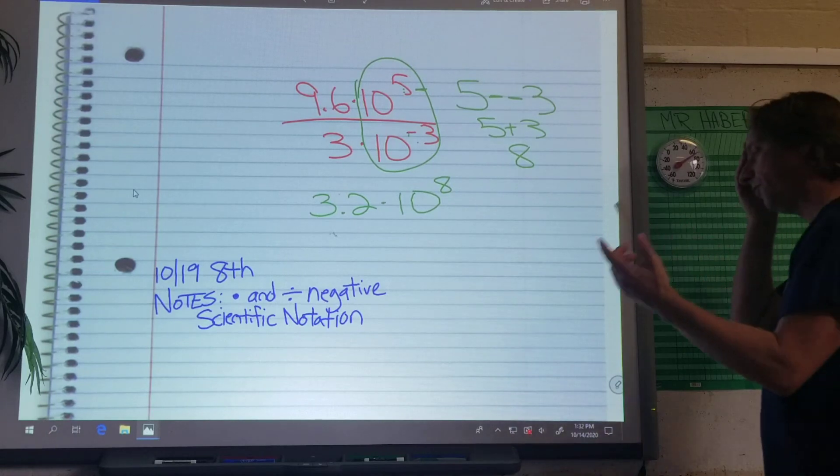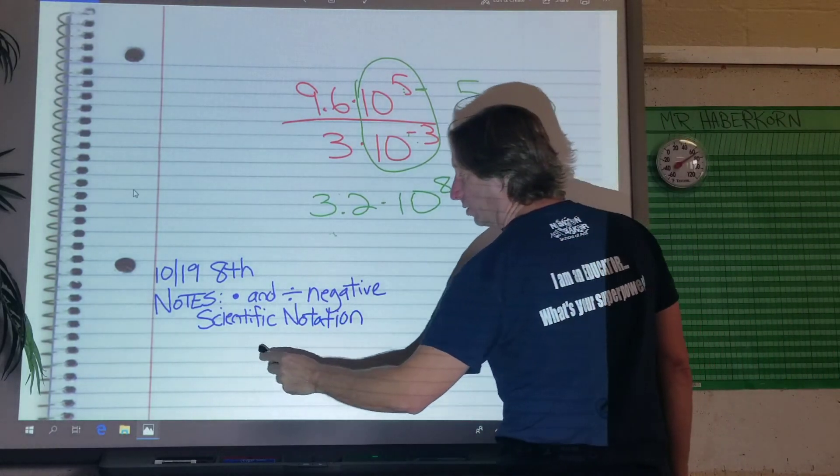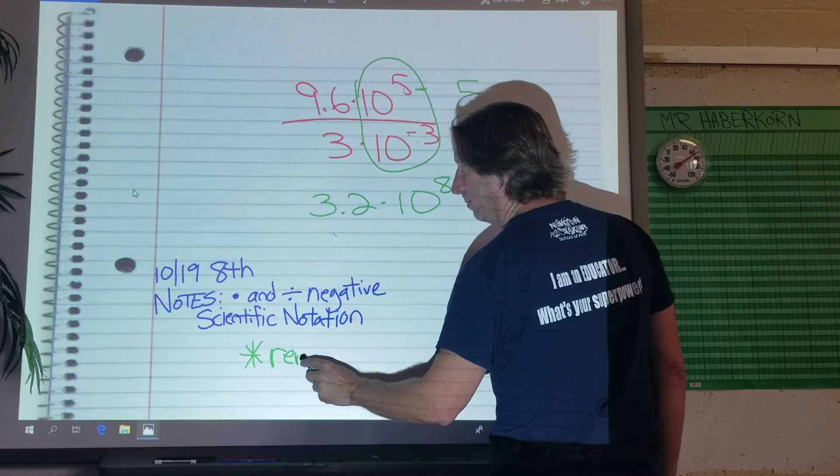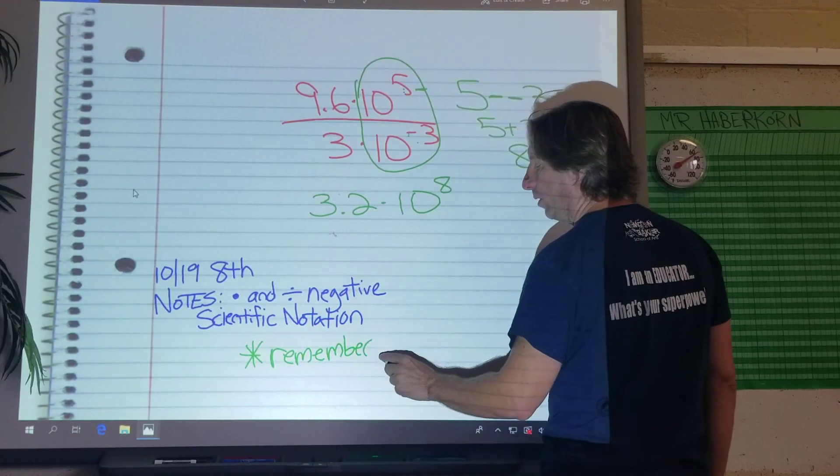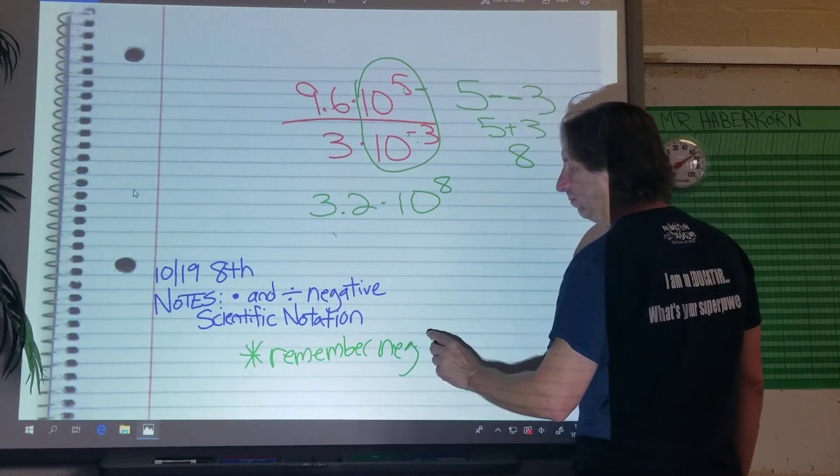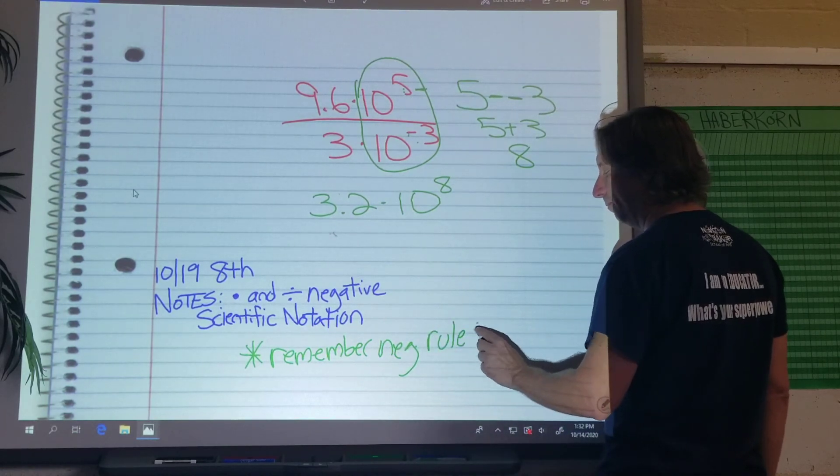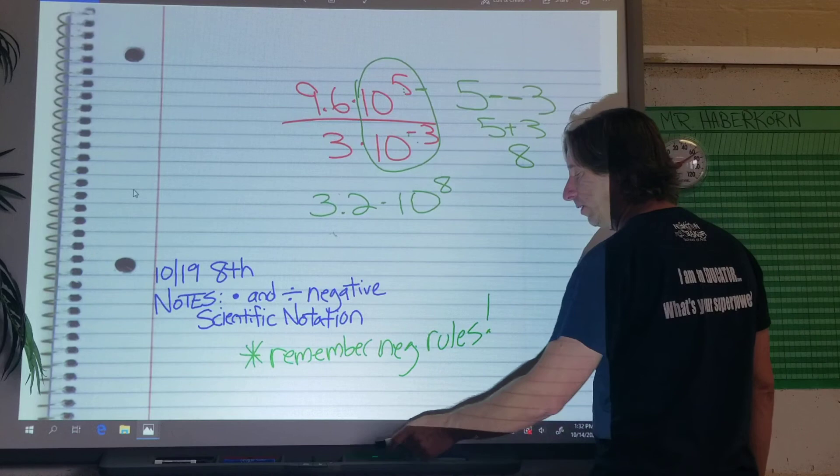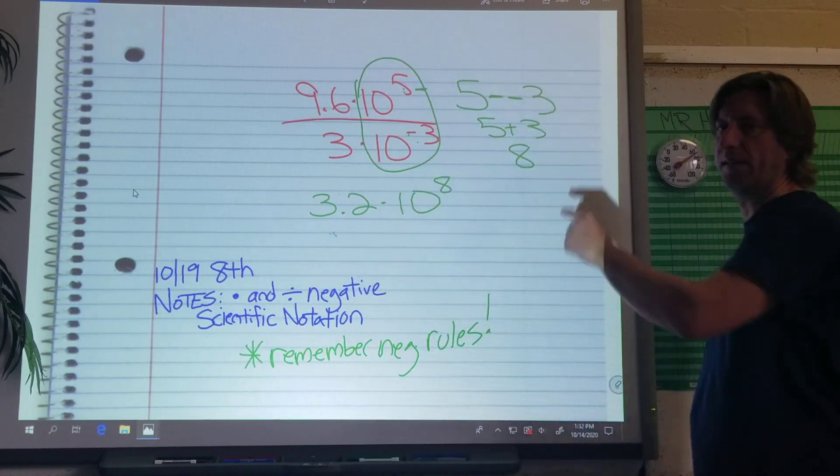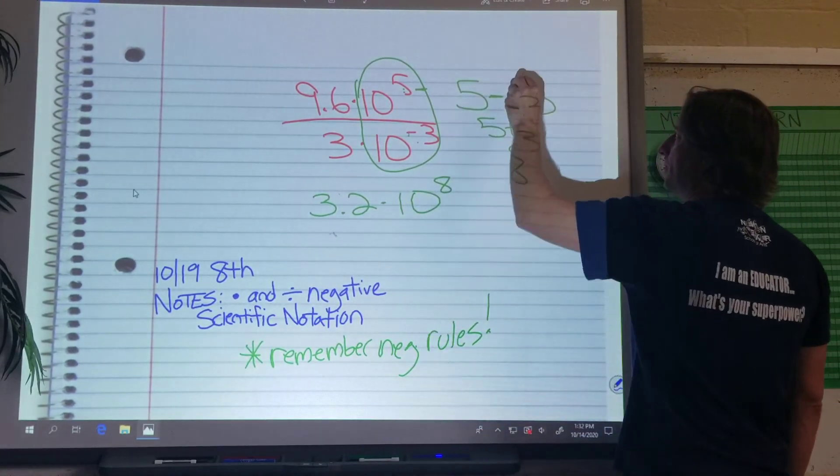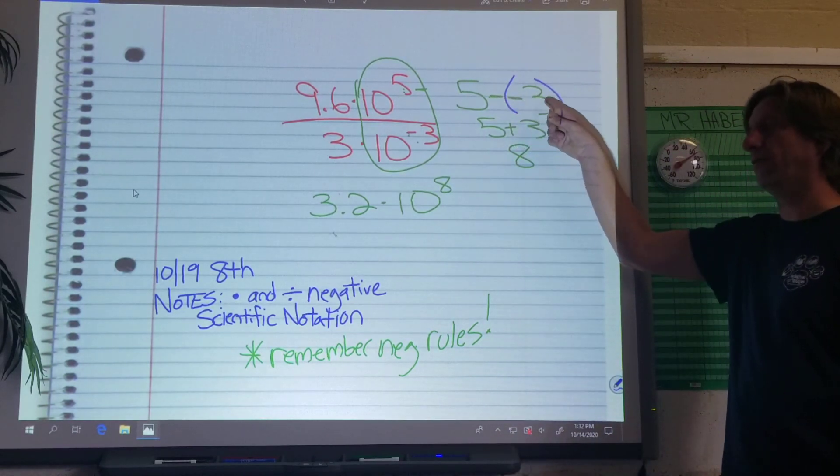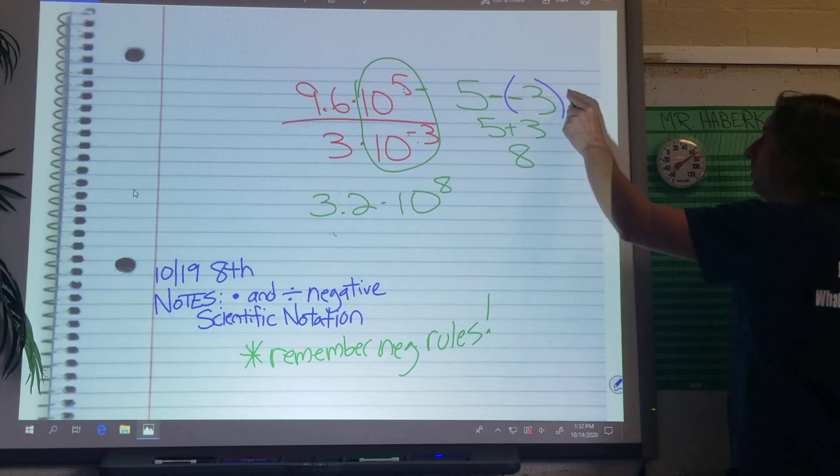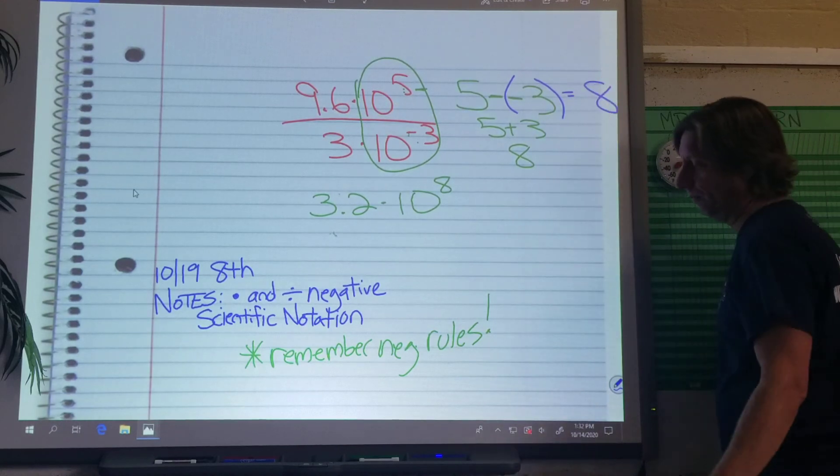So I end up at 3.2 times 10 to the 8. So all you have to do with these is the same thing as what we've been doing. Just remember 7th grade. Remember your negative rules. Take your time. We're going to use the calculator. We do 5 minus negative 3 in your calculator. You type it in like this. 5 minus parentheses negative 3. And if you type that in your calculator, it's going to give you a positive 8. Okay?